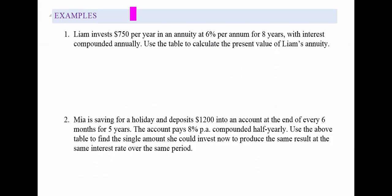Leon invests $720 per year into an annuity at 6% per annum for 8 years with interest compounded annually. So we know the interest is compounded annually. We're saying what is the actual amount of money that I have to put in right now that's going to give me the same value as putting in contributions of $750 per year.